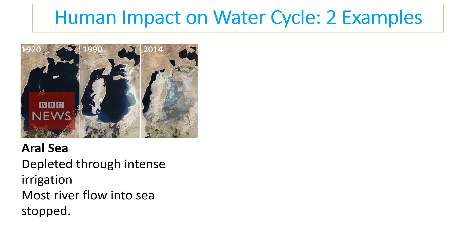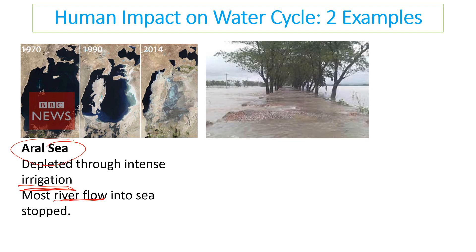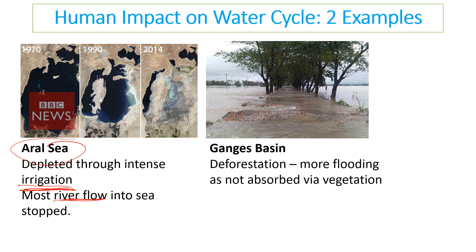Two examples likely to come up in exams: the Aral Sea, which has been depleted through intense irrigation — you can see its depletion over many years because so much water has been taken from the rivers feeding it to irrigate farmland. The second example is the Ganges basin, where deforestation has caused more flooding because water is no longer being absorbed by vegetation. I hope that's been helpful — now go to video two, which is about ocean currents.